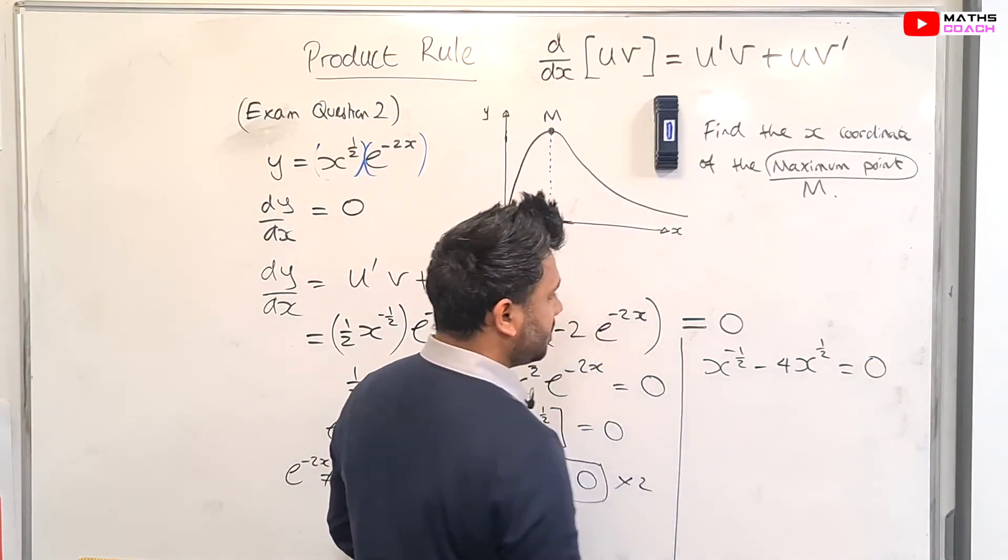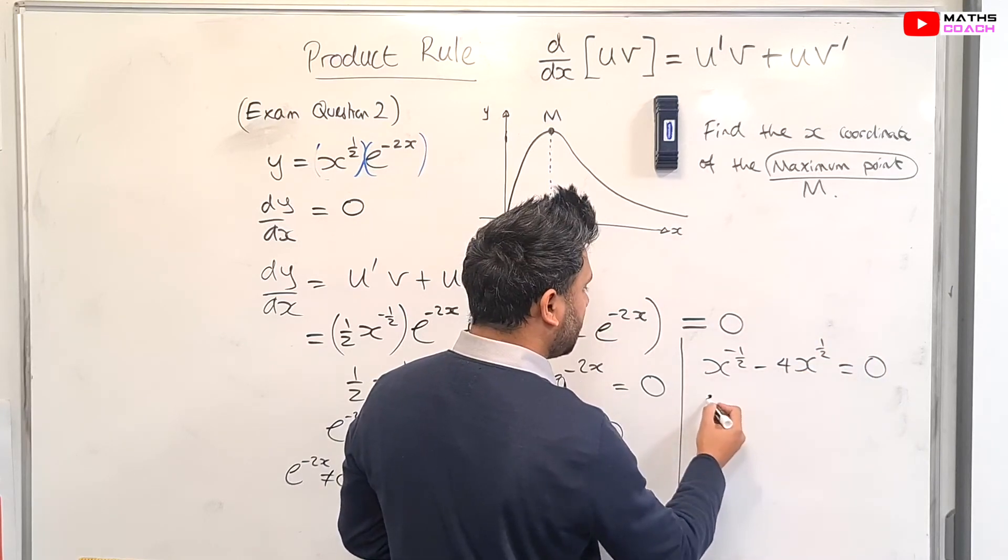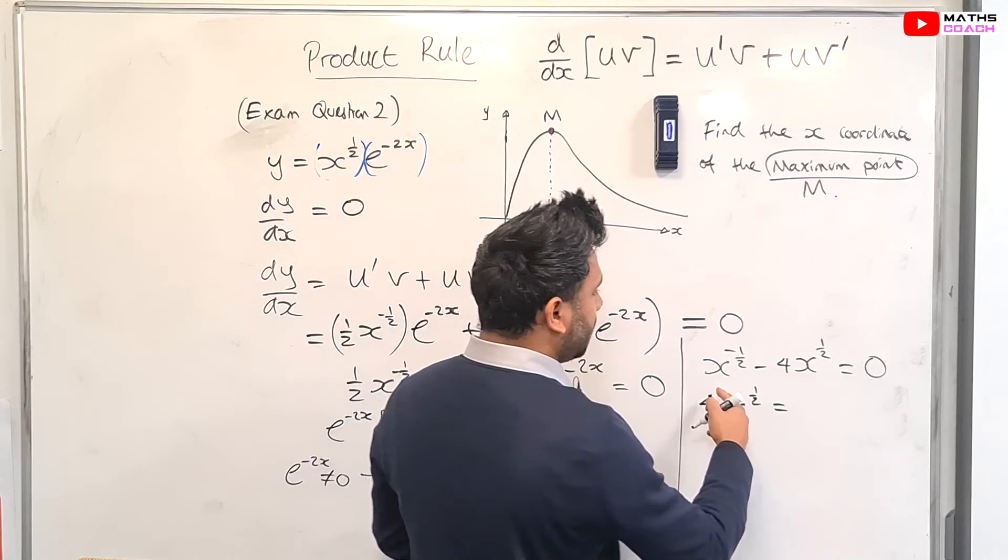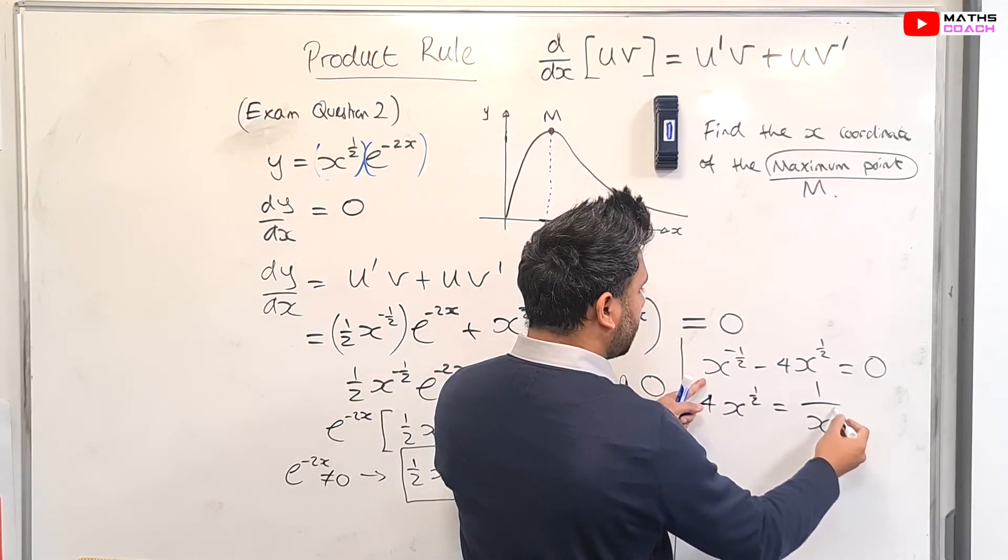And if you just rearrange this, so take the minus four to the other side and we get 4x to the power of a half equals to, x to the power of a half is the same as one over x to the power of a half.